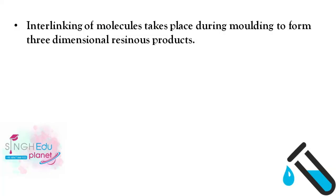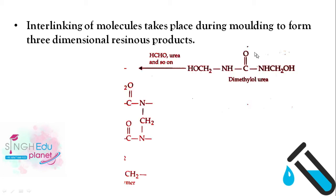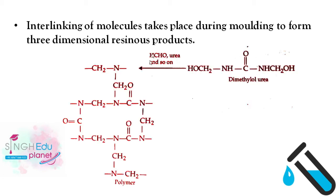Interlinking of molecules takes place during molding to form 3D network products. The urea and formaldehyde combine to produce a cross-linked network polymer, giving us the urea formaldehyde resin.